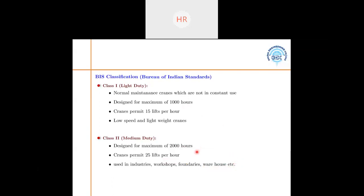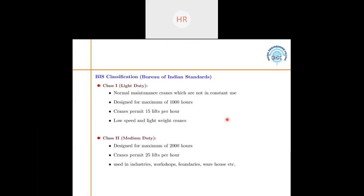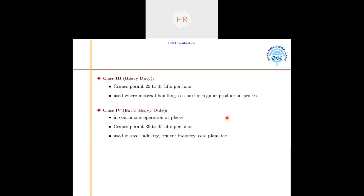Class 3 heavy duty cranes permit 26 to 35 lifts per hour and are used when material handling is part of a regular production process, meaning these cranes are in continuous use. Class 4 extra heavy duty cranes are also in continuous operation and are used in the steel industry, cement industry, and coal plants. These are the four classifications given by BIS: light duty, medium duty, heavy duty, and extra heavy duty.